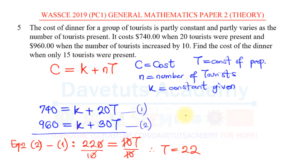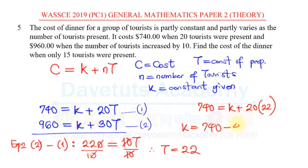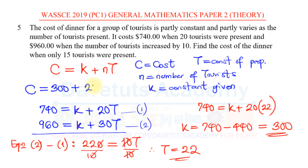Using the value of T in equation 1: 740 = K + 20T. Substituting T = 22, we get K = 740 minus 20 times 22, which is 740 minus 440, giving K = 300. So our general equation is C = 300 + 22N, which we can use to find the cost for any number of tourists.